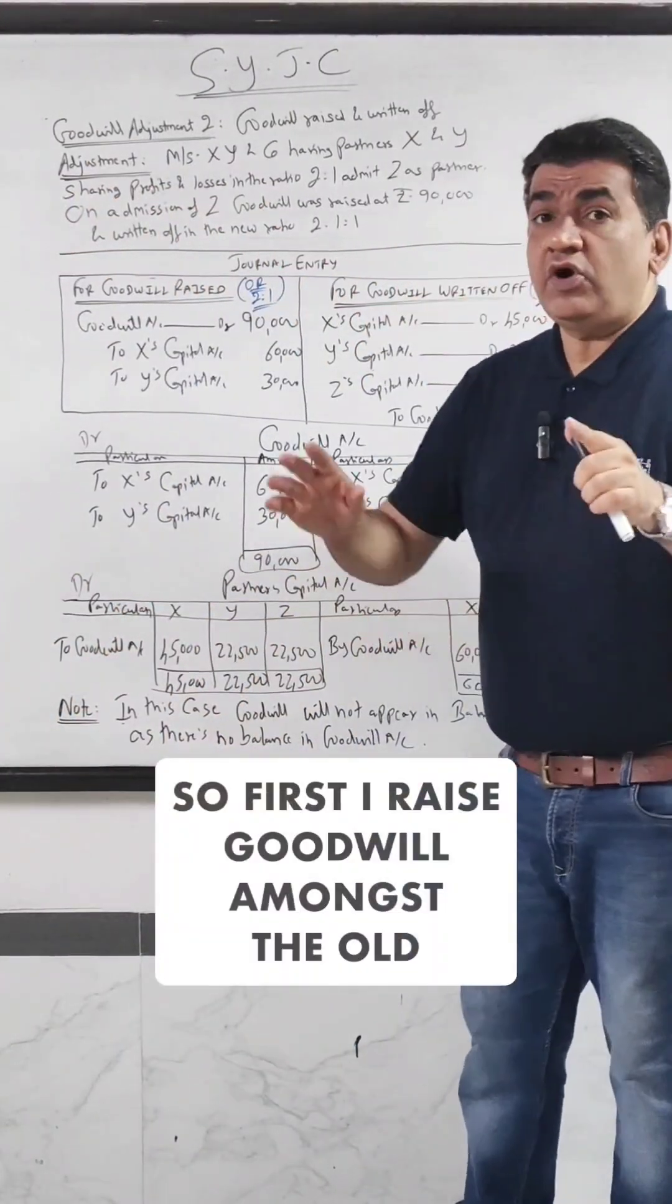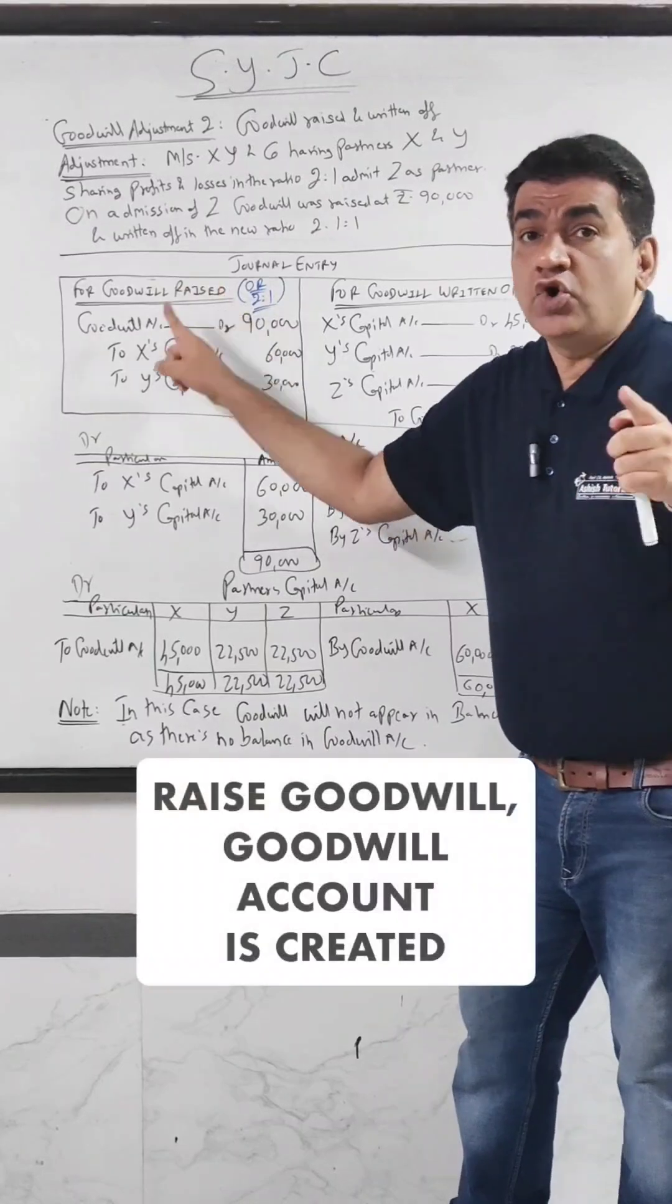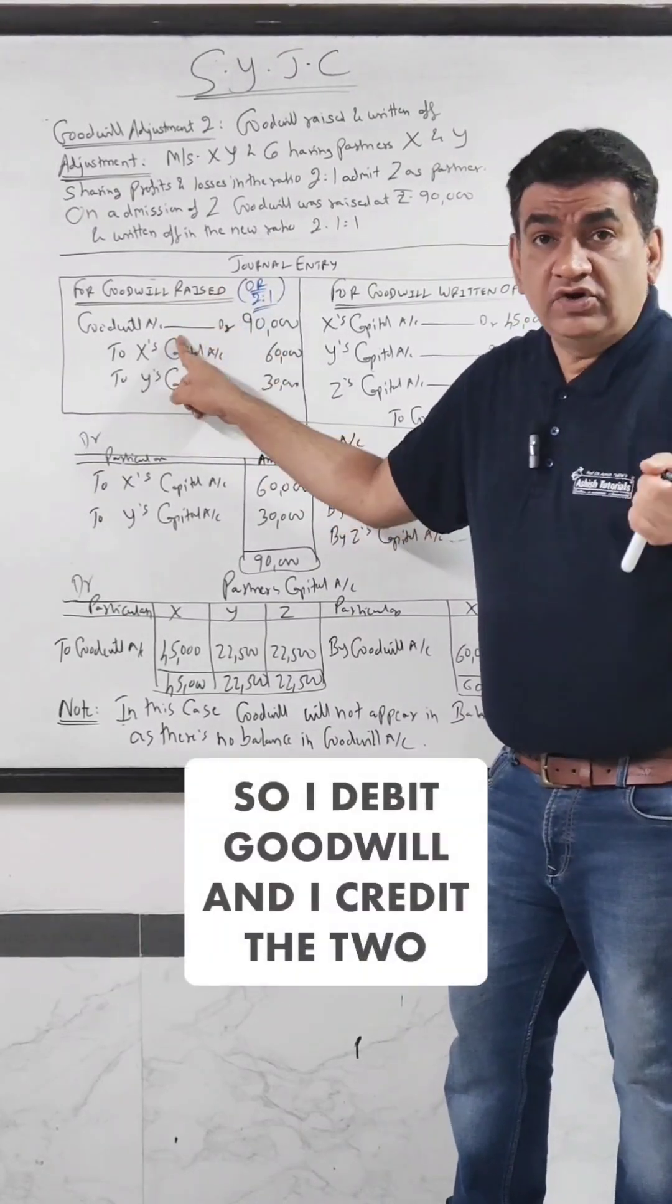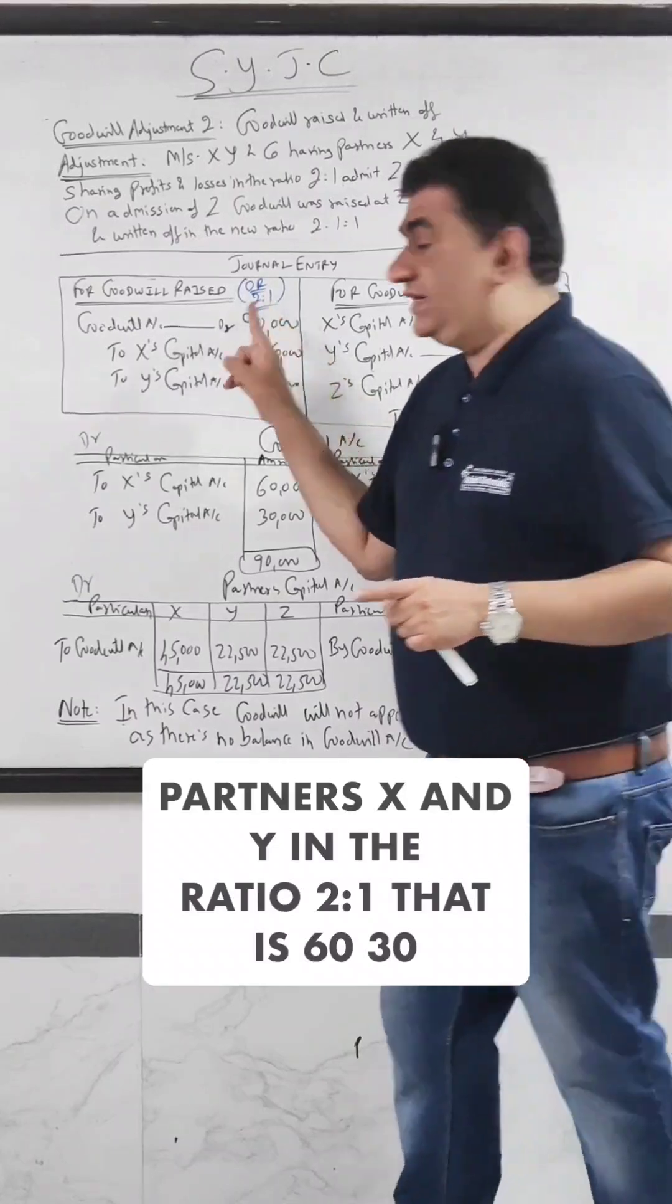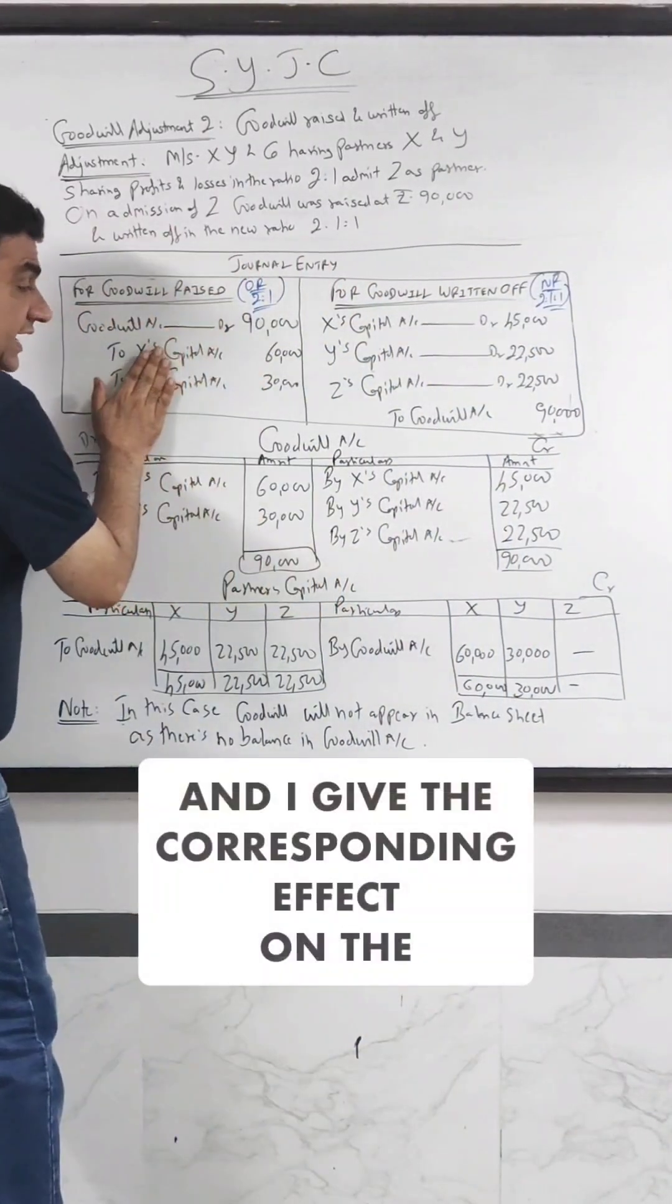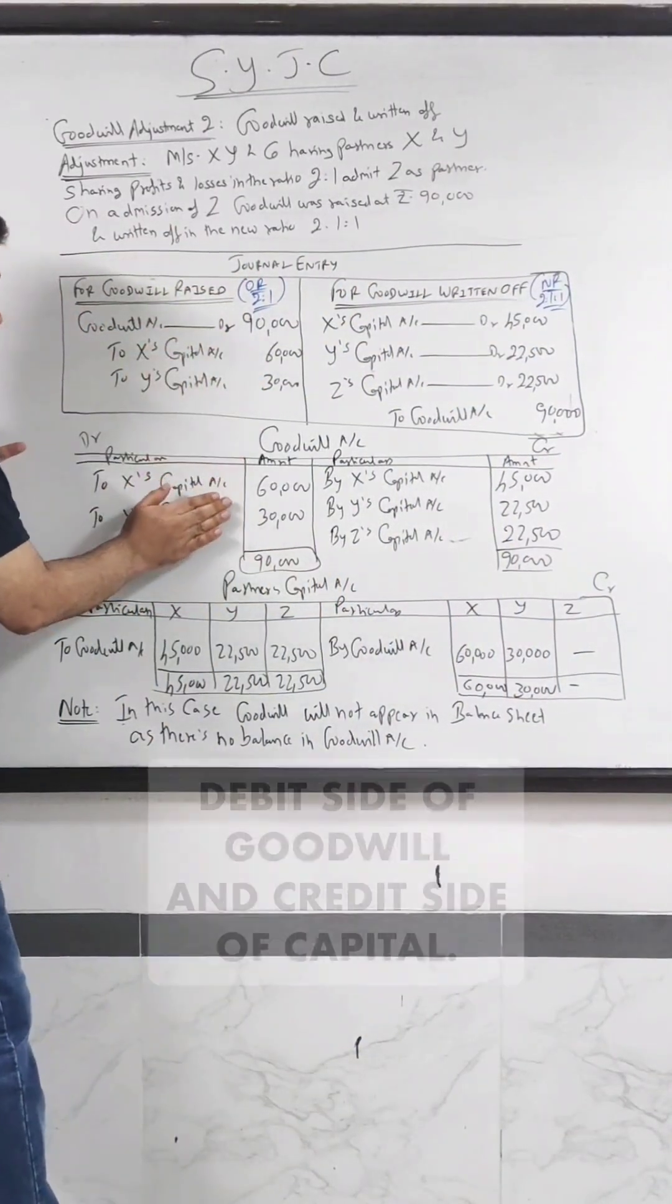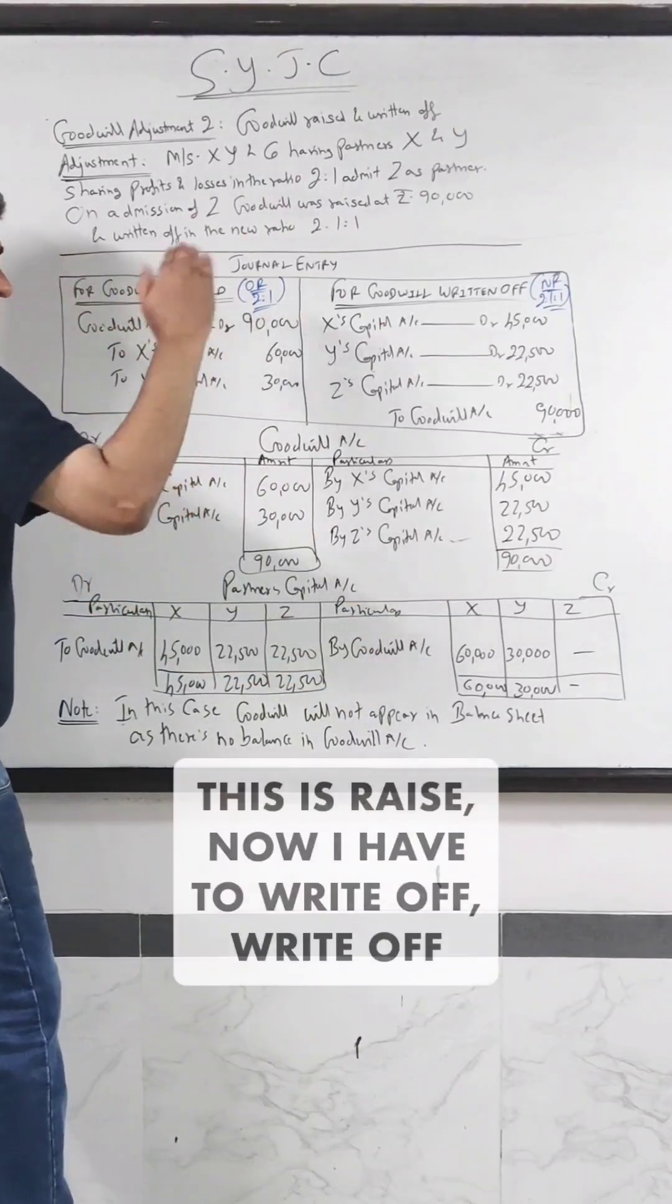So first I raise goodwill amongst the old partners only. Raise goodwill, goodwill account is created so I debit goodwill and I credit the two partners X and Y in the ratio 2 is to 1 that is 60-30 and I give the corresponding effect on the debit side of goodwill and credit side of capital. This is raised.